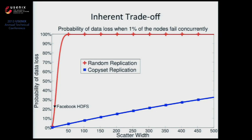This scheme is a tradeoff: if you want to reduce recovery time — increase scatter width — you will always have to create more copy sets. The difference between random replication and copy set replication is the rate at which you're increasing data loss probability per scatter width added. With random replication you get a cubic increase in probability of data loss for every scatter width added, while copy set replication gives a close-to-linear increase, which is close to optimal. So for the same scatter width, copy set replication always gives a much lower probability of data loss.